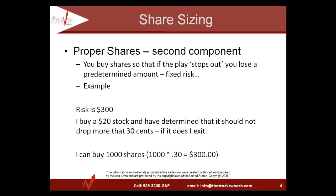If we stop out of a play, we size our shares so that the loss is a fixed risk. For example, if we're risking $300 and you buy a $20 stock and determine that it should not drop more than 30 cents, then you'd be allowed to buy 1,000 shares, because 1,000 shares times 30 cents equals $300.